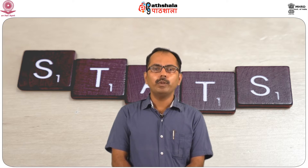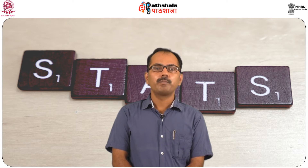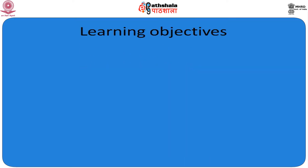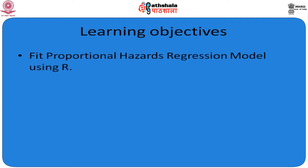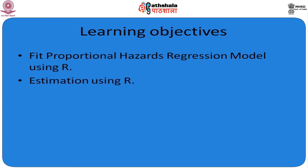In this module, we will check the application of Cox proportional modeling on a small data set through R. We are going for estimation and inference for the Cox proportional model using R. By the end of this module, we will see how to fit a Cox proportional hazard regression model using R, how to get estimations on survival data, and predictions about survival for a specific age of a patient.